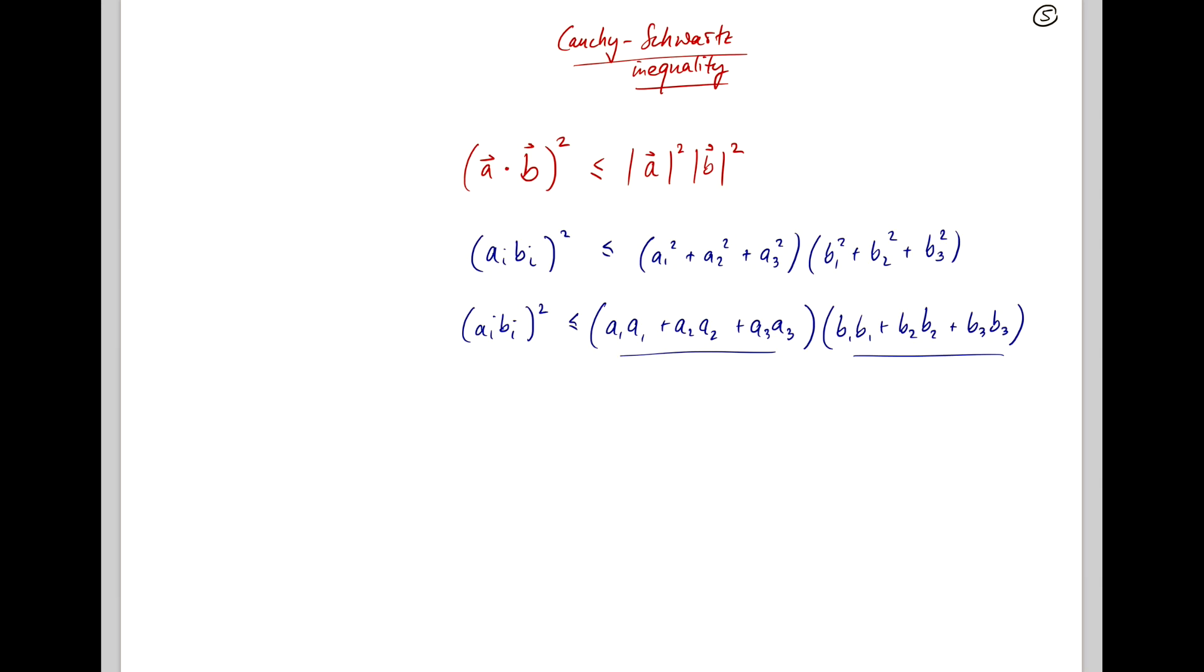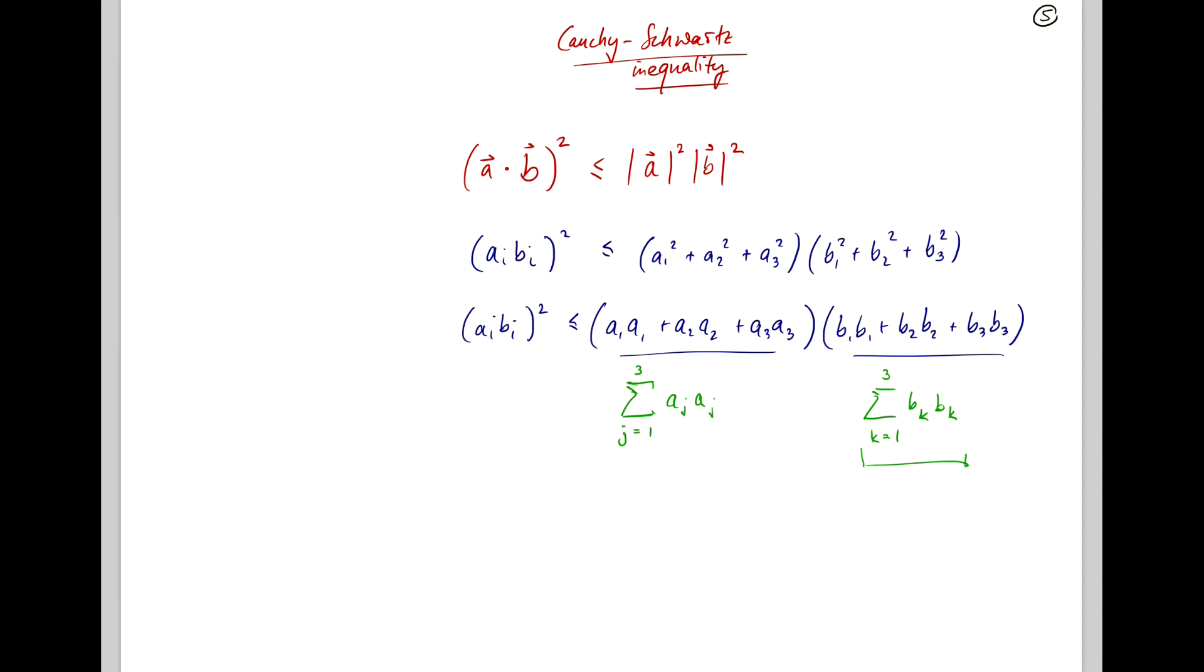So, if you look at those two terms of the product here, you realize you can just write this as the sum of, let's use a different dummy variable here, ajaj, with j going from 1 to 3. And the same over here, you can just say this is bkbk, with k going from 1 to 3. And the reason why I'm using different indices here is because I want to sum over the three components, 1, 2, 3 here, independently of what's going on with the a's. Yeah, so I go j, 1, 2, 3, k, 1, 2, 3.